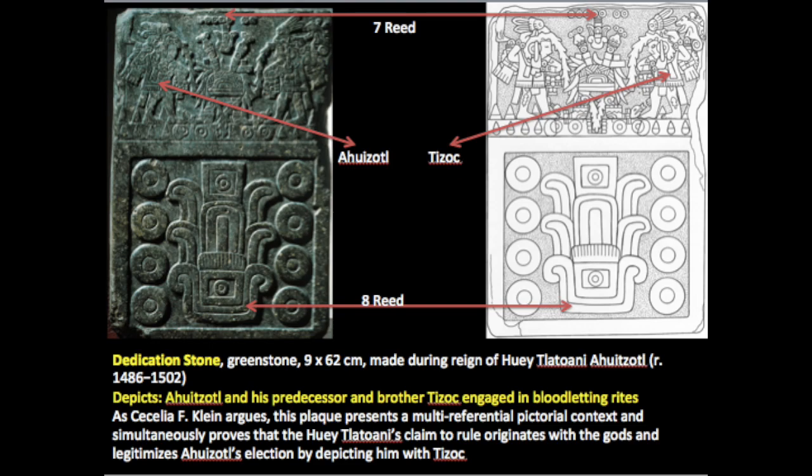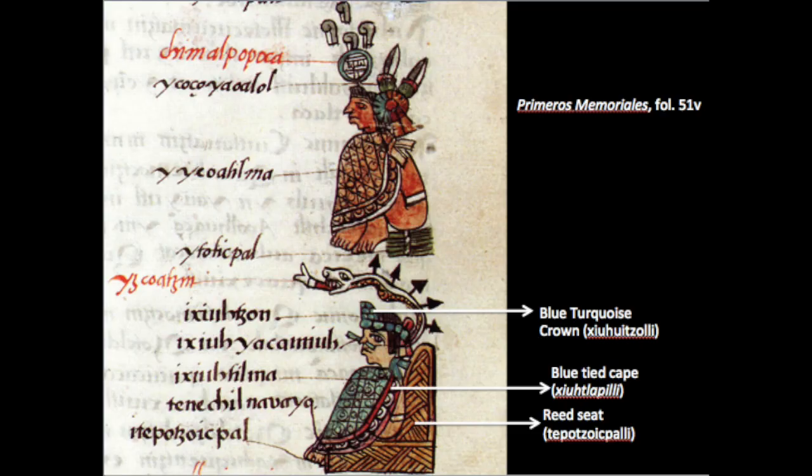Some of the paraphernalia a Huey Tlatoani would wear included a blue turquoise crown considered holy, a beautiful blue tight cape, and he would sit on a throne made of reeds — which is almost like a glyph of a Huey Tlatoani.